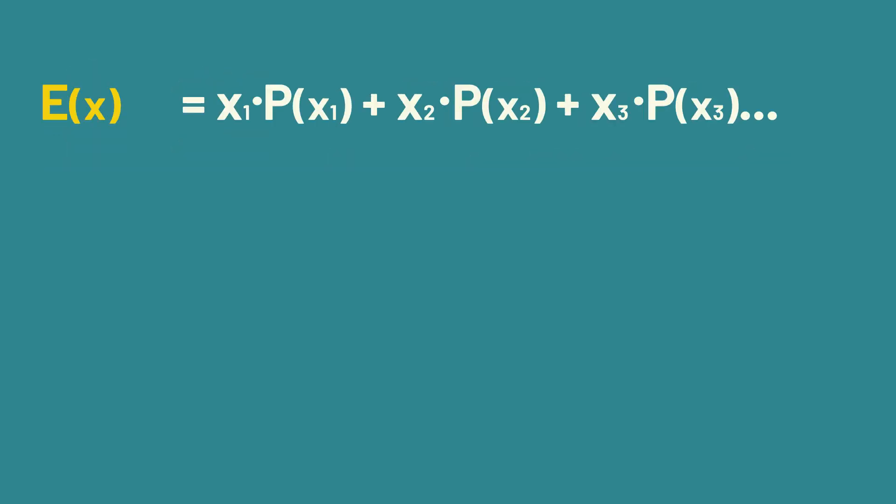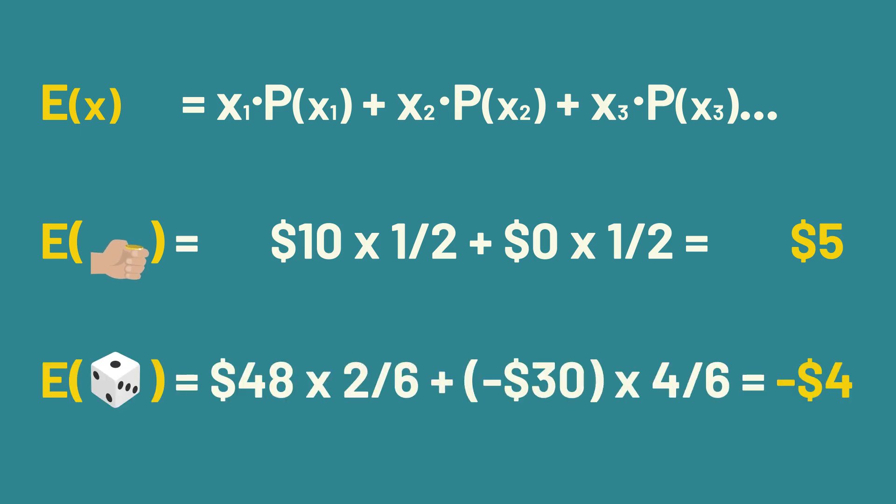The general formula for expected value is the sum of each outcome multiplied by the probability of that outcome occurring. It's written like this.